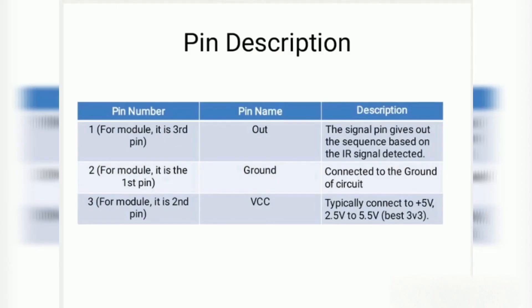Let's talk about its pin description. First, pin number 1. For module, it is pin number 3. Name: out or signal. The signal pin gives out the sequence based on the IR signal detected.